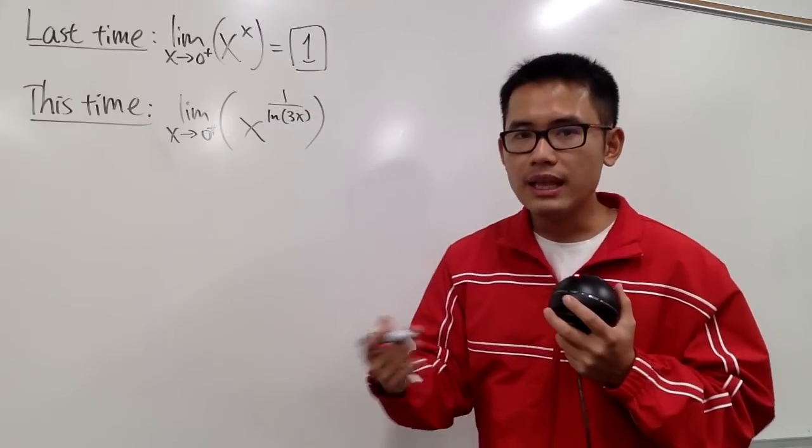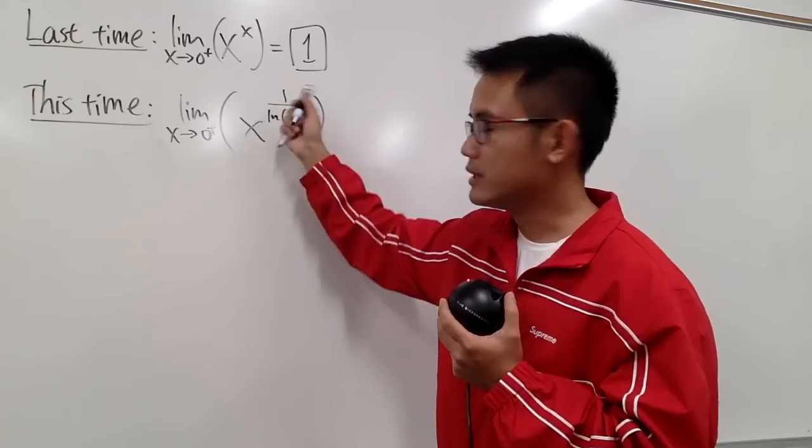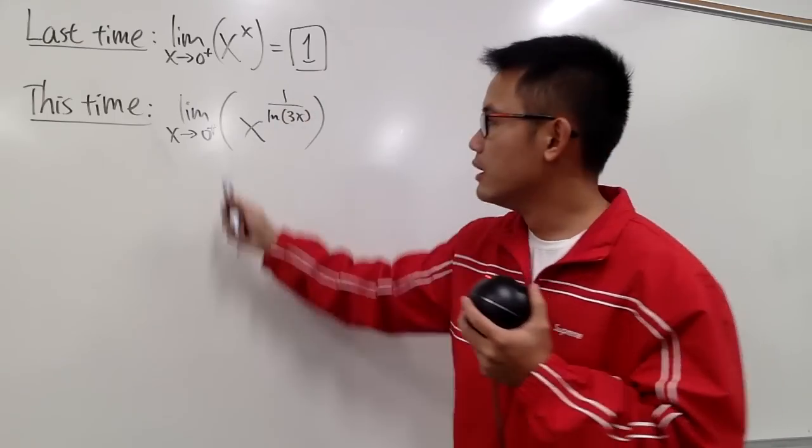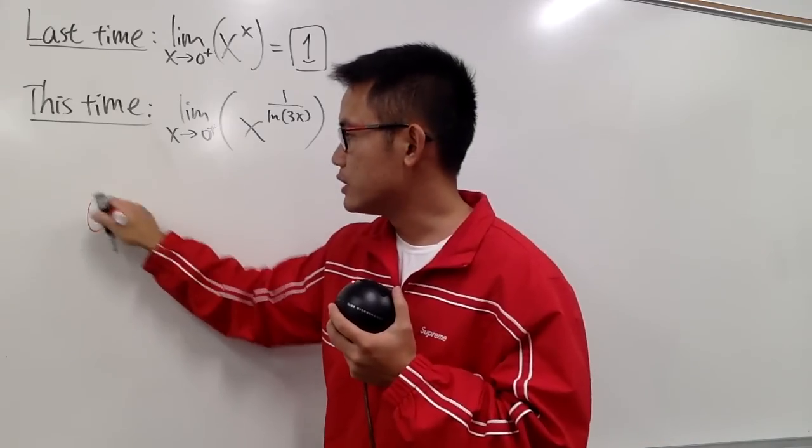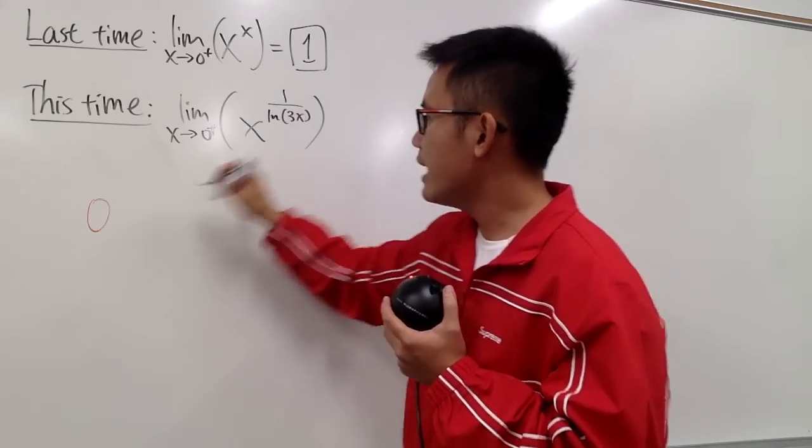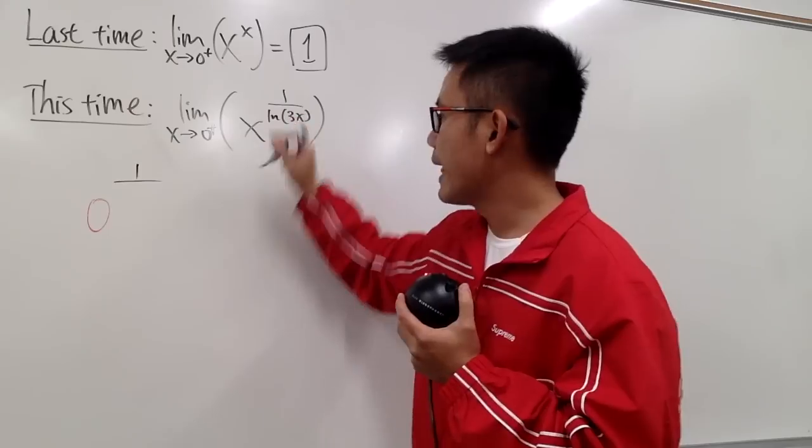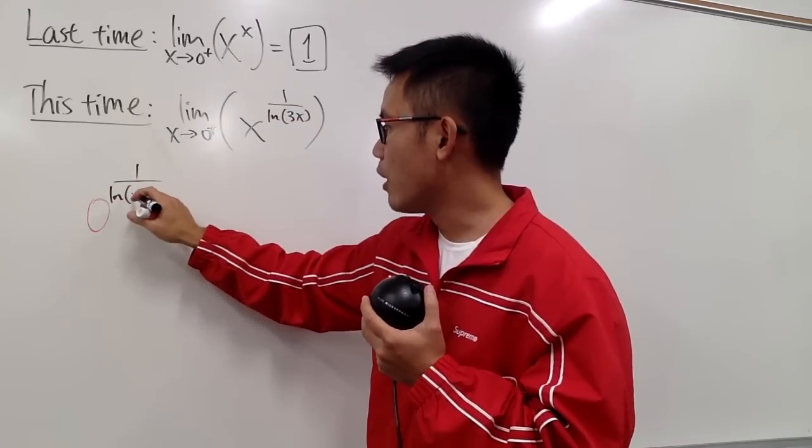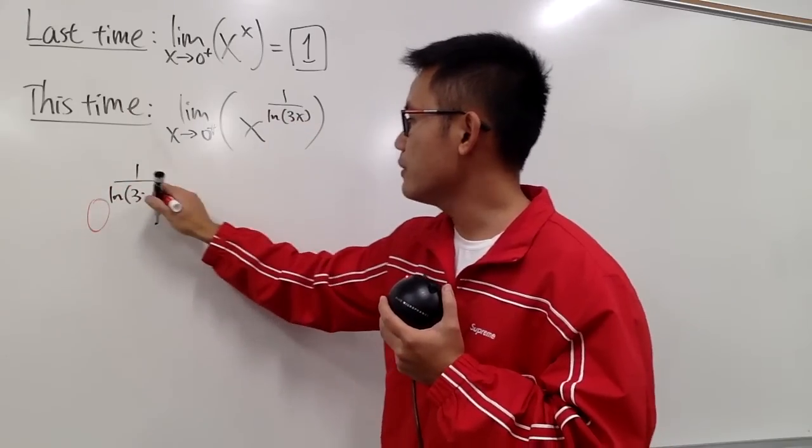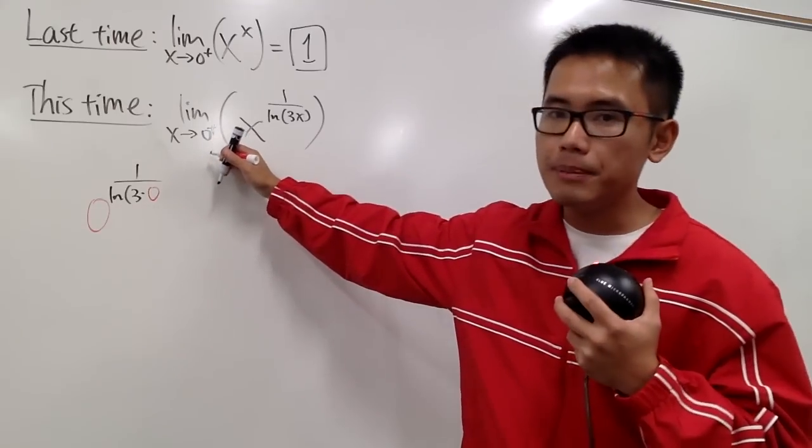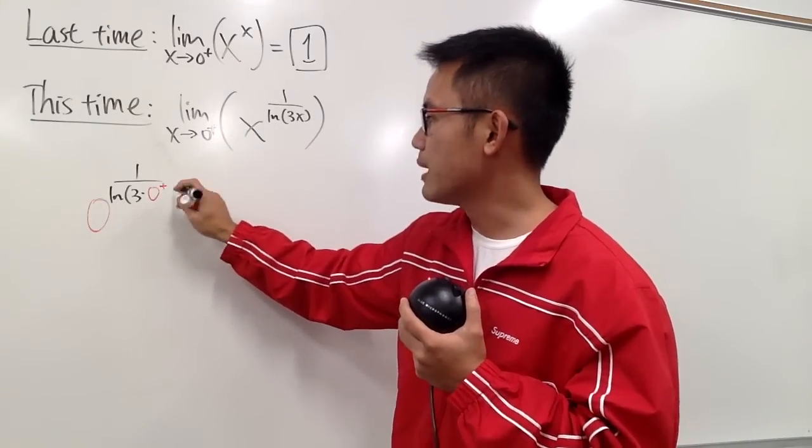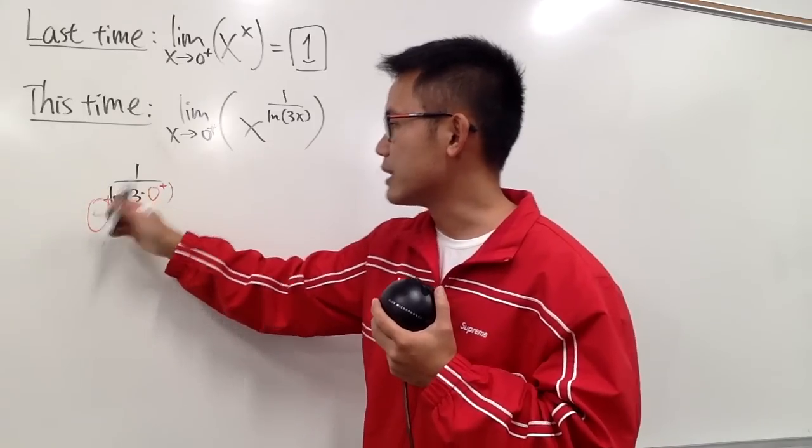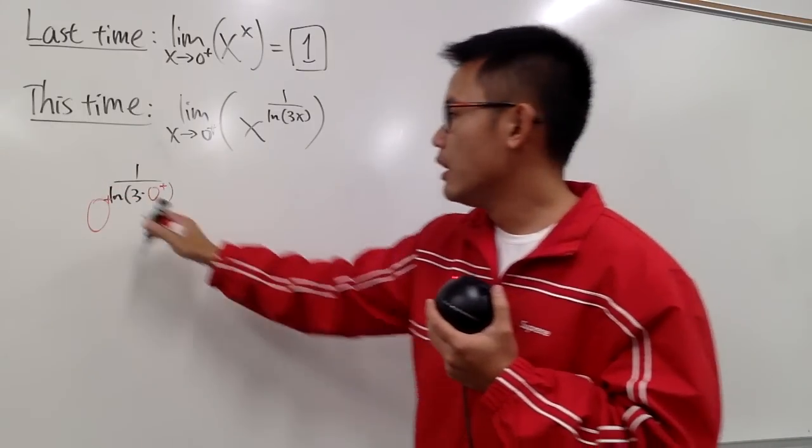First of all, let's verify that this is indeed a 0 to the 0 situation. So let me plug in 0 plus into this x and that x. We will have a 0 for the base, and then 1 over ln of 3 times 0. And because we are talking about natural log, we actually would like to indicate the 0 plus right here. And technically, I should do the same right here as well.